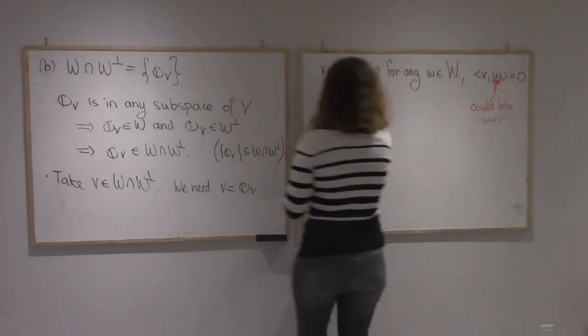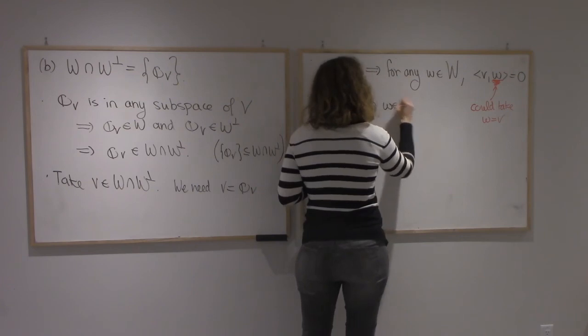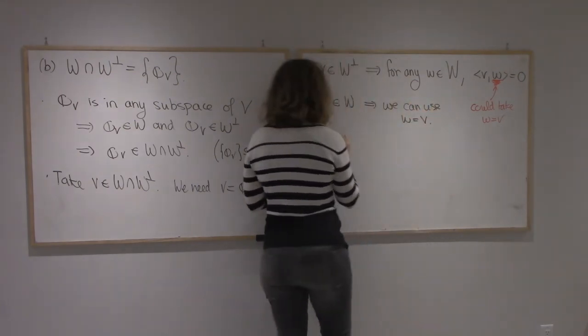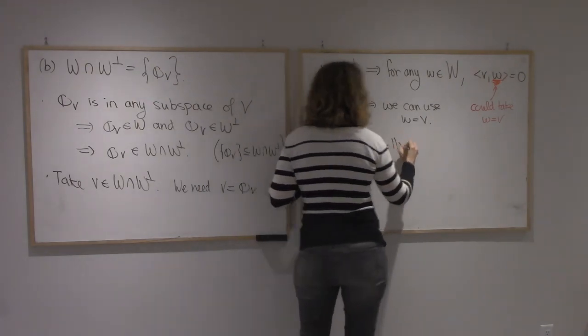Alright, so since v is in W. So that means v dot v, which is the length of v, well,